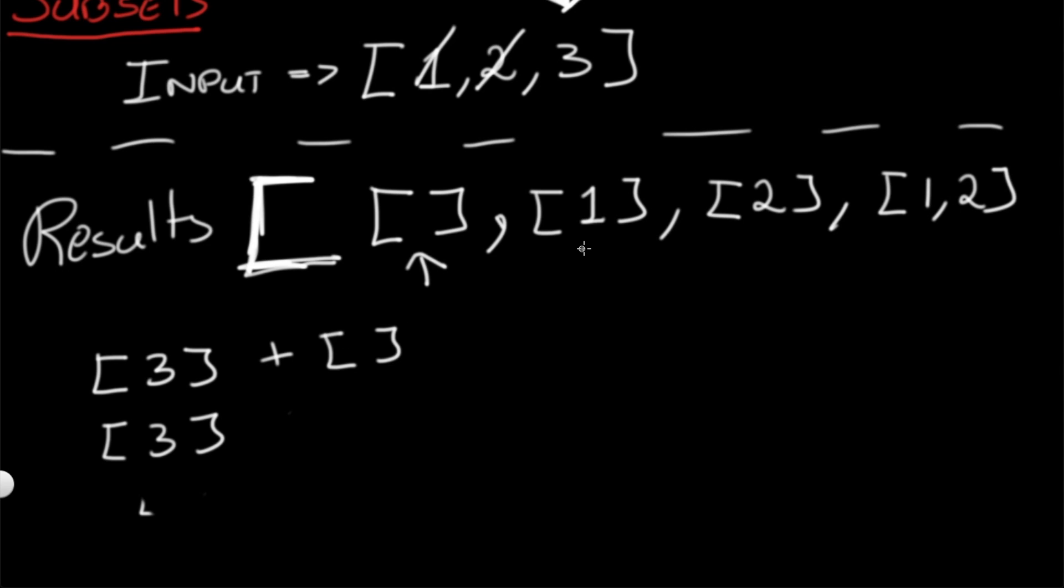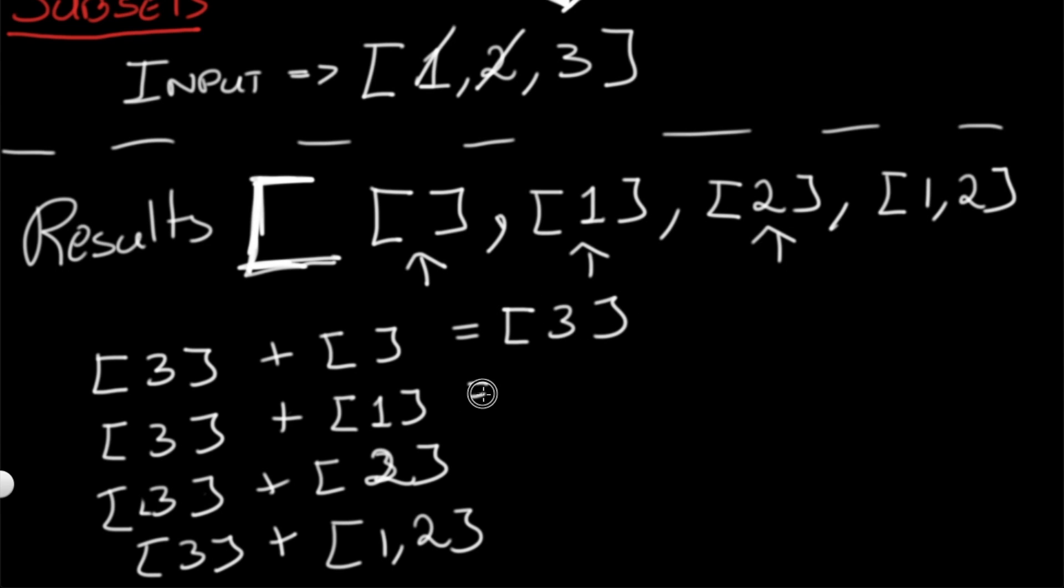We have [3] plus [1], then we have [3] plus [2], and finally [3] plus [1, 2]. Let's add these all up. Over here we just get [3], over here we get [3, 1], over here we get [3, 2], and finally over here we get [3, 1, 2].